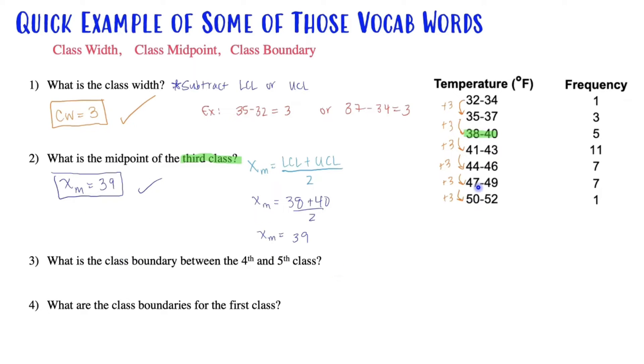What is the class boundary between the 4th and the 5th class? So that's asking between the 4th and 5th class, what is that boundary? You can almost already guess this one. It goes from 43 to 44. What would be the middle of 43 and 44? It's going to be 43.5. So how did I get that? I averaged the two values. 43 plus 44 divided by 2 gives us 43.5.